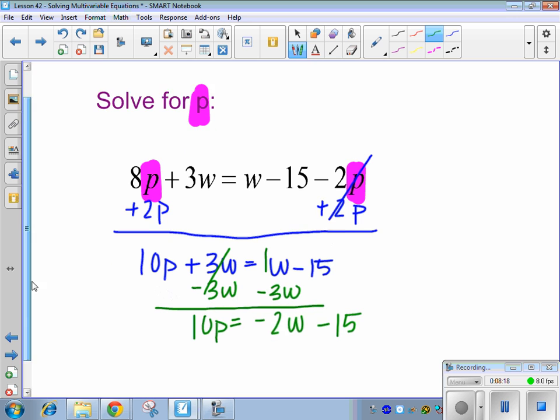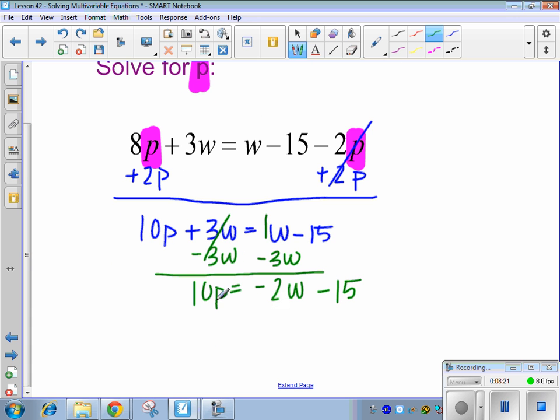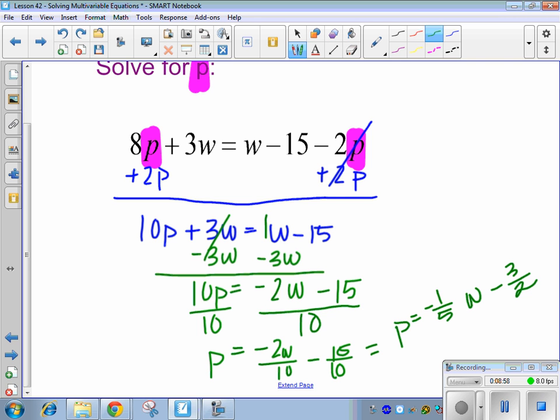And finally, Evie, what would you do to get p all by itself? Divide both sides by 10. Divide by 10. So, I'm going to get that p equals. Ella, what's p going to equal once I simplify these out? Minus 15 over 10. So, now, Josh, if I want to make this as simplified as possible, what am I going to have? W minus 3 halves. Perfect.